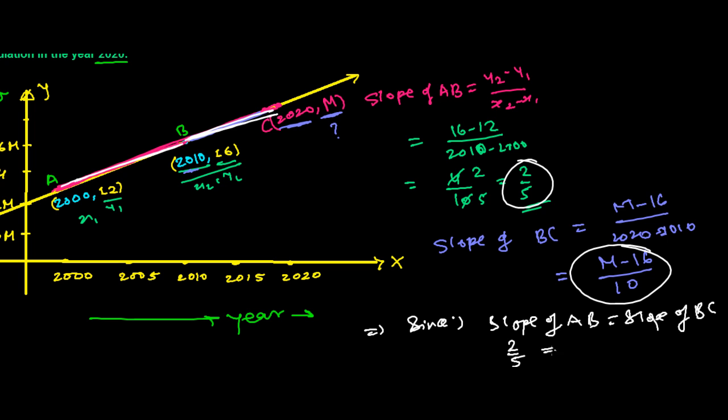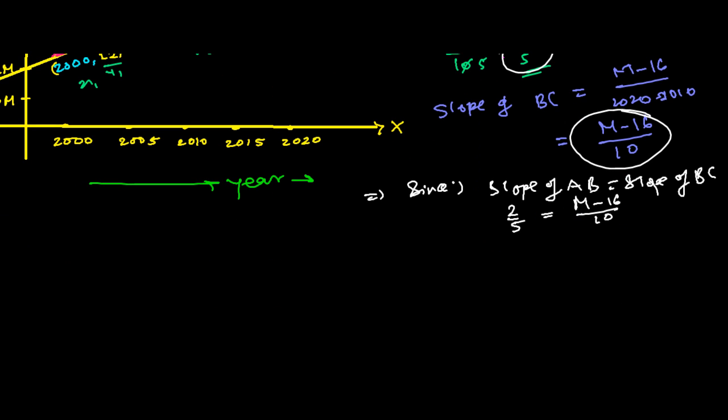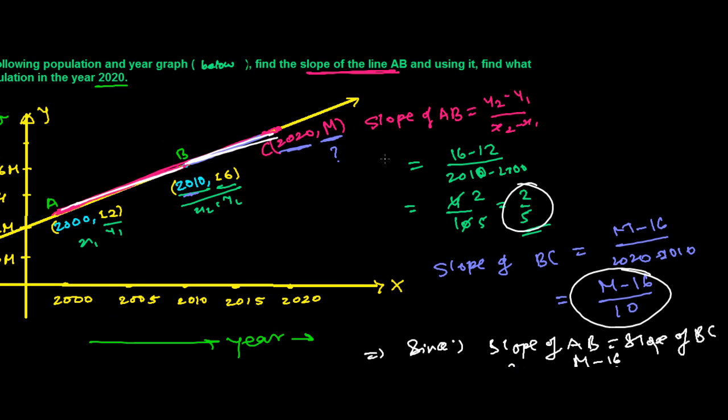So let's solve it. Very simple, 5 times 2 and this 2 will be this 2, so we'll get 4 and M minus 16, and this 4 plus 16 will be M. So therefore, the value of M is going to be 20. It means the population of that city in year 2020 will be 20 million.